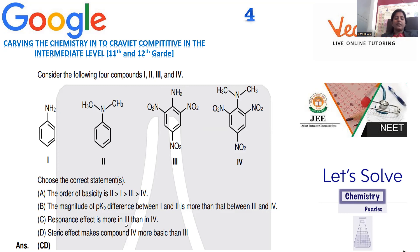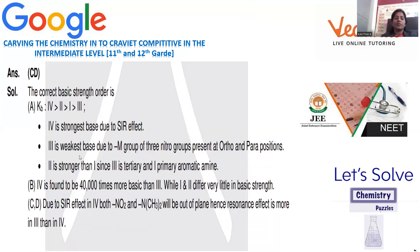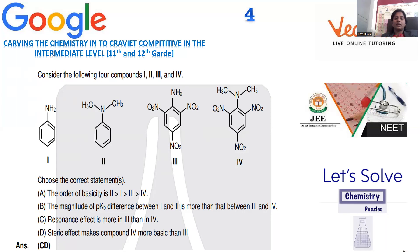In compound three, the NH2 nitrogen is in the same plane as the benzene ring, so electrons are freely donated to the ring structure. But in compound four, the nitrogen is bent out of plane due to steric hindrance from methyl groups, so electrons are not available for resonance. Therefore compound three has higher resonance effect than four. Steric effect makes compound four more basic due to electron release from methyl groups. Options C and D are the correct answers for question number four.